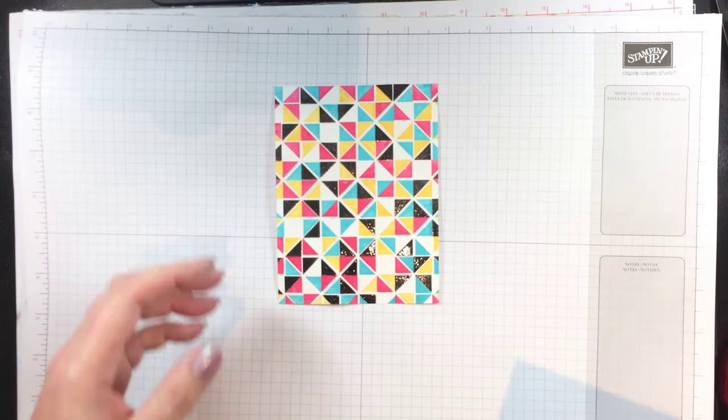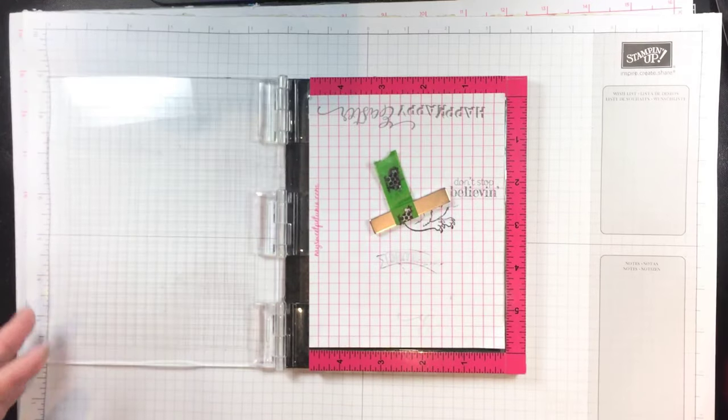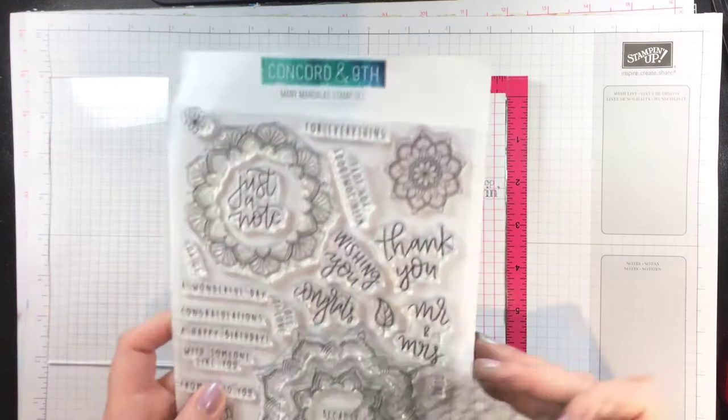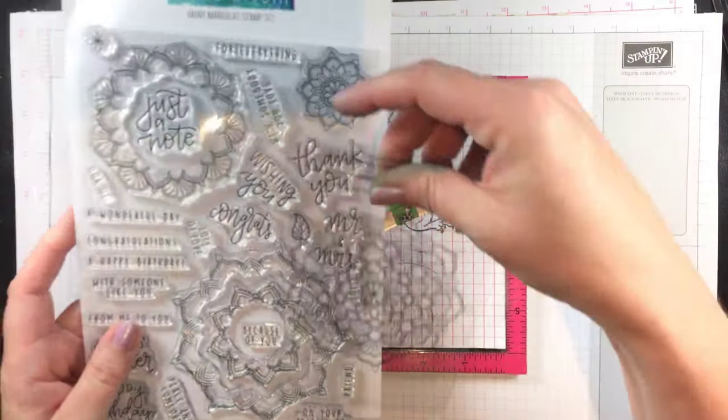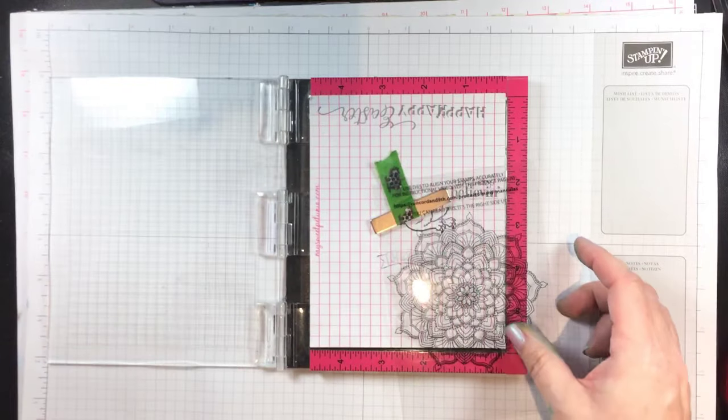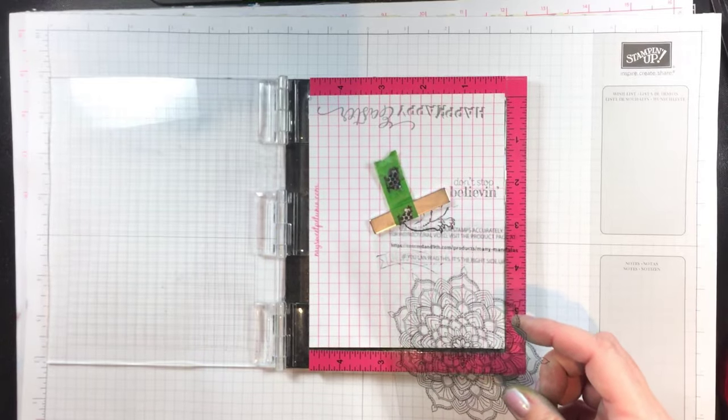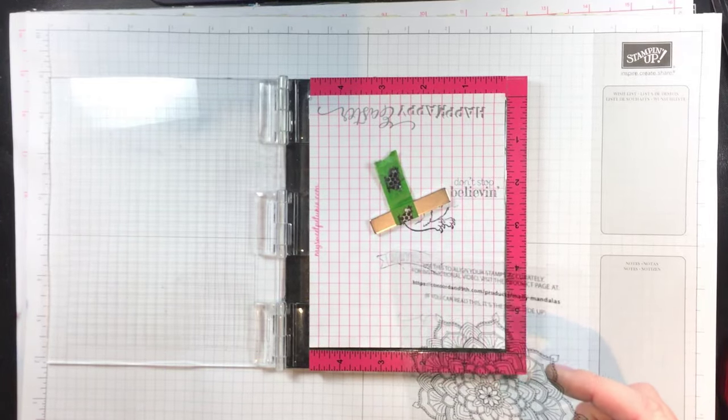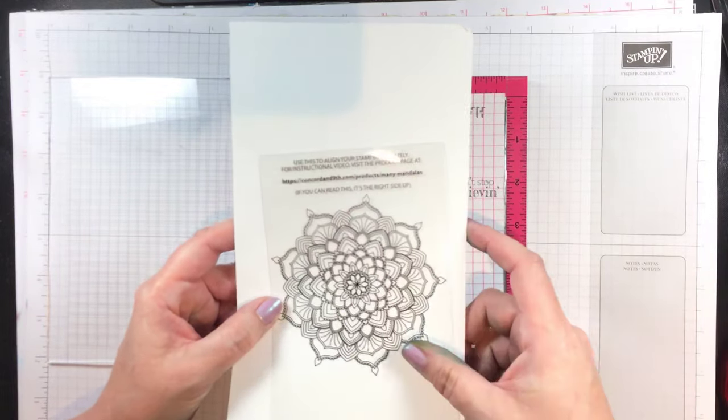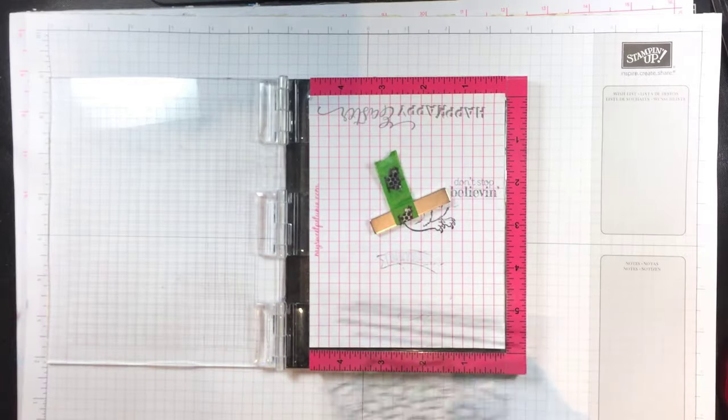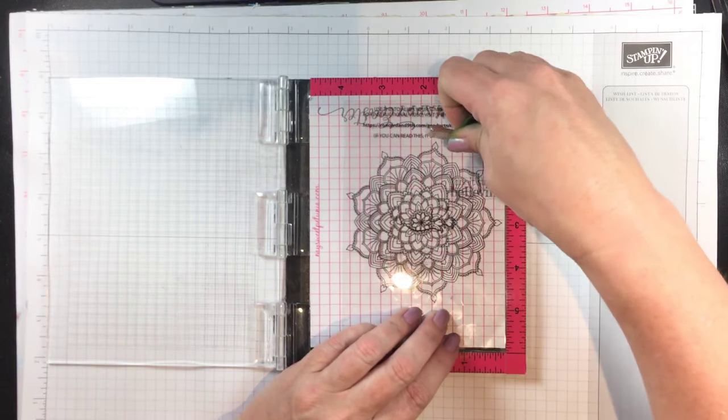So next up is the mini mandalas stamp set, which is a fun layering mandala, yes rhymes like gondola stamp set, and it comes with this little acetate guide and I will show you how that works. It helps you make sure that you have each layer positioned perfectly. So let me grab a white piece of paper so you can see it. It says if you can read this it's the right side up so you'll know whether you have this positioned properly and you'll want to put this guide down first into your MISTI.